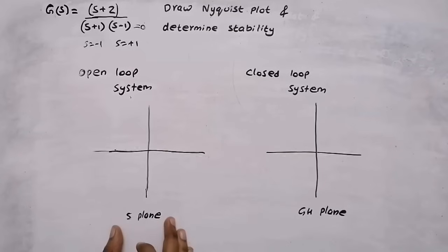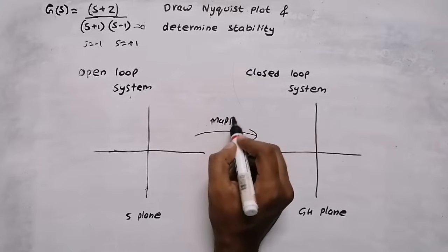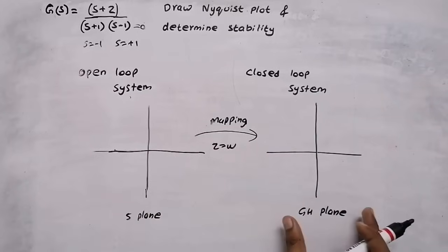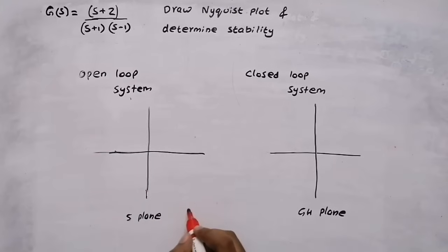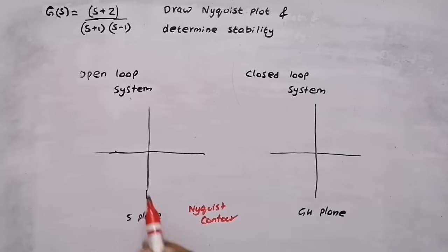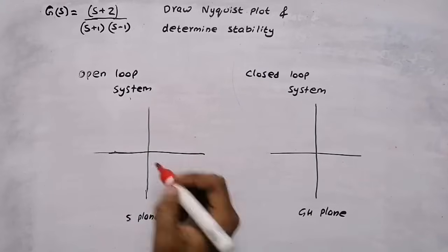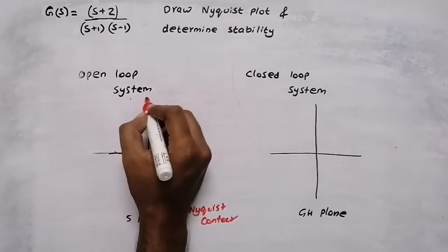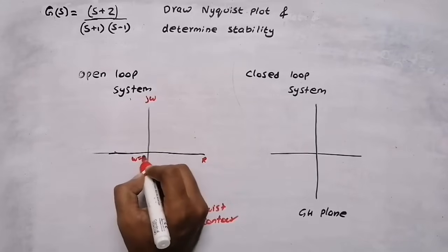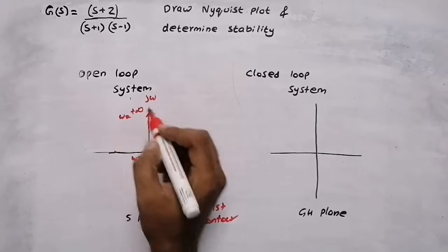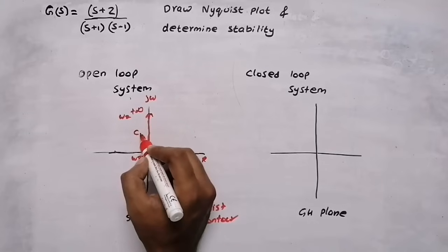By using the S plane we plot the GH plane — this process is called mapping, similar to the z-plane to w-plane mapping in complex analysis. We take the entire right half plane. In polar plot the equation of a circle is R e raised to j theta, where R is the magnitude and theta is the angle. I am going to name the first region C1.